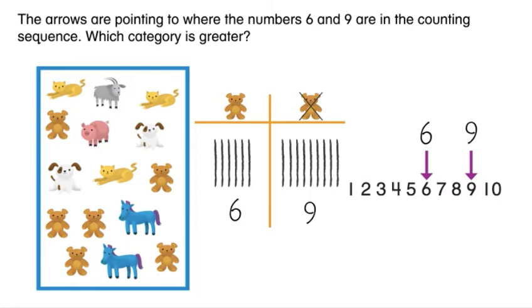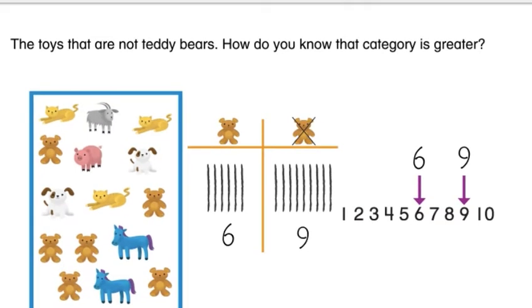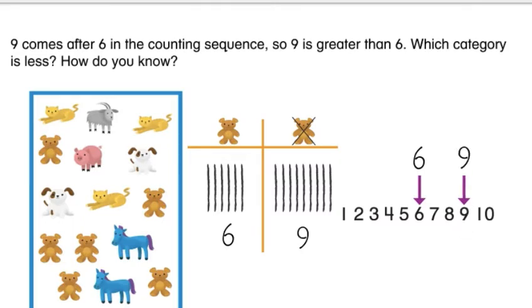Which category is greater? The toys that are not teddy bears. How do you know that category is greater? Nine comes after six in the counting sequence, so nine is greater than six.